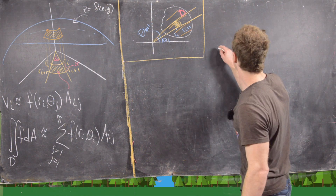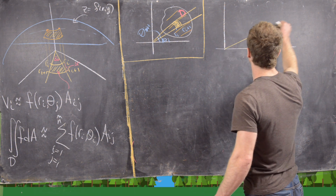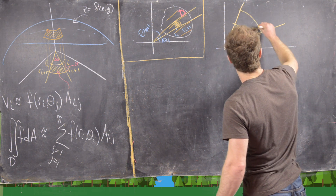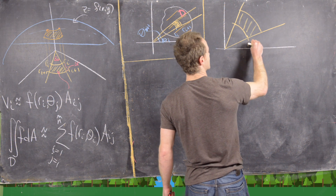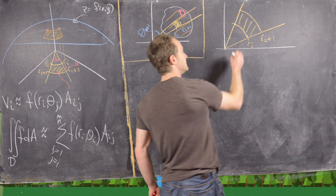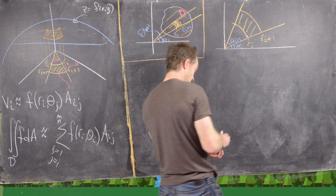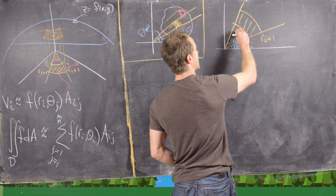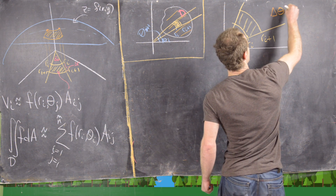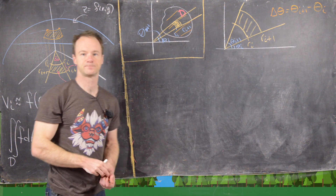So we want to look at this region in the plane. It's the sector of an annulus whose inner radius is r_i, outer radius is r_{i+1}, first angle is θ_i, and second angle is θ_{i+1}. I can write this angular width as Δθ, setting Δθ = θ_{i+1} − θ_i. So that's going to be the angle of this sector.